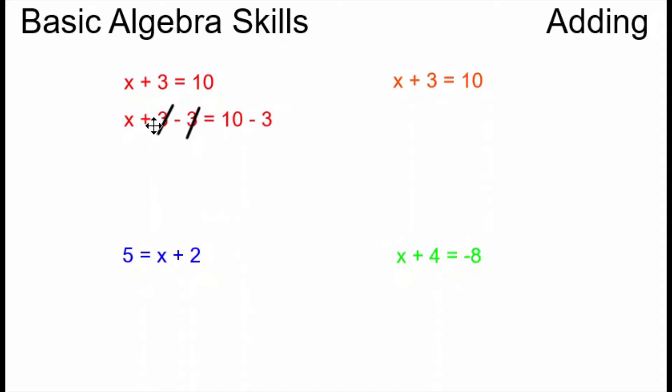These two 3's cancel. So my x is alone on the left side of the equal sign and 10 minus 3 is 7 so I'm able to write x equals 7. That's my answer.